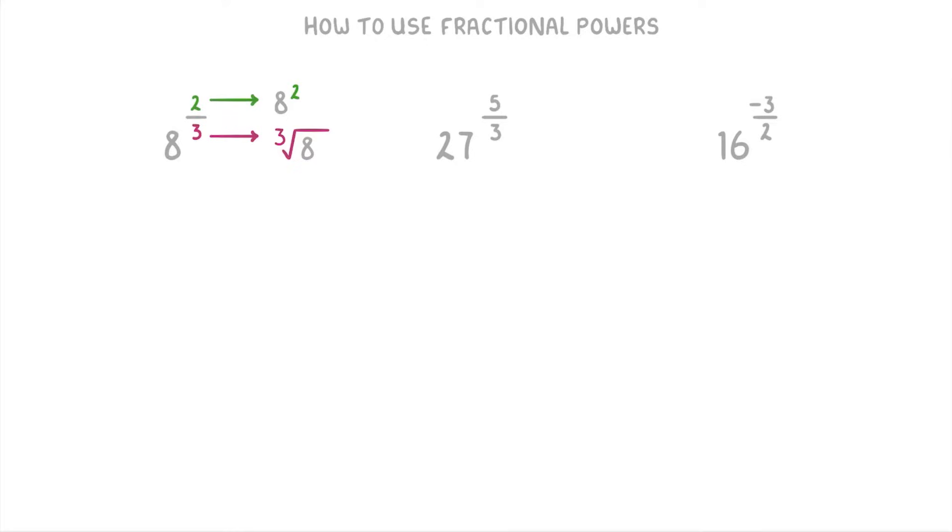you want to rewrite it as the cube root of 8, all squared, which we can then simplify. The cube root of 8 is 2, and 2 squared is 4, so our answer is 4.